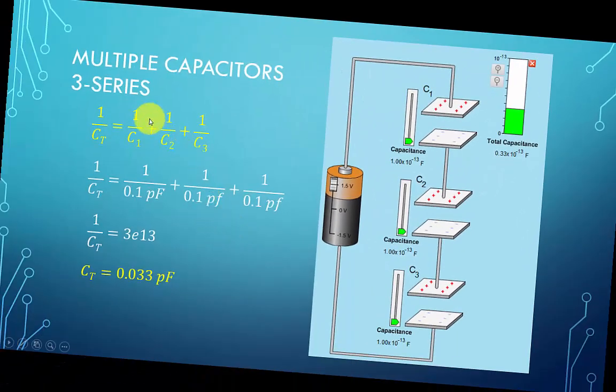Now we can extend this formula to 1 over Ct equals 1 over C1 plus 1 over C2 dot dot dot plus 1 over Cn, where n is the number of capacitors in series.